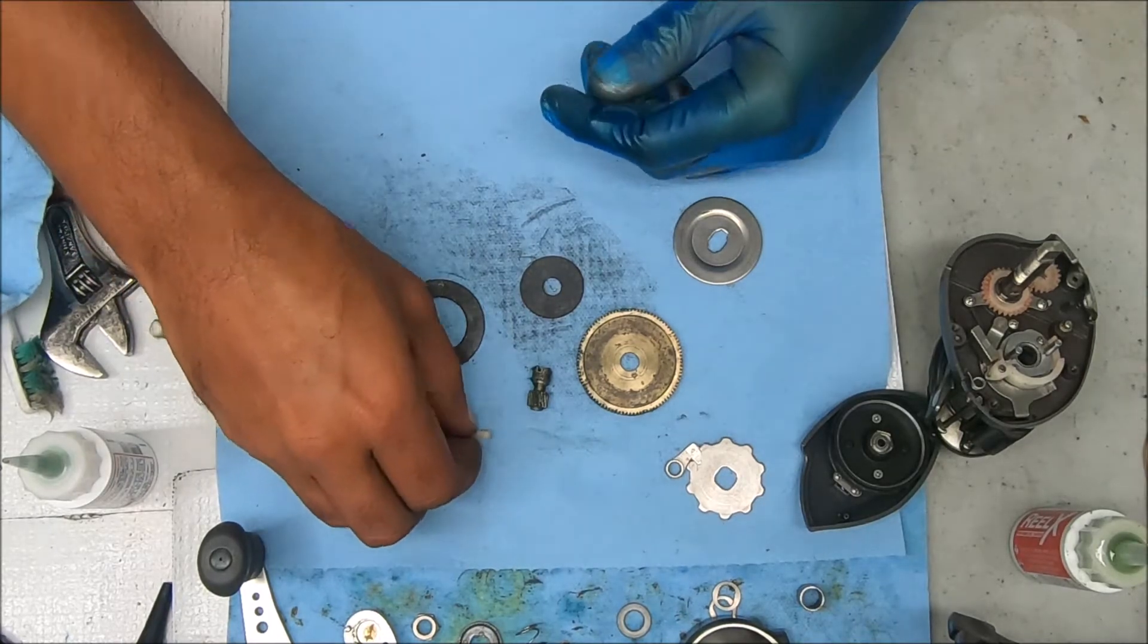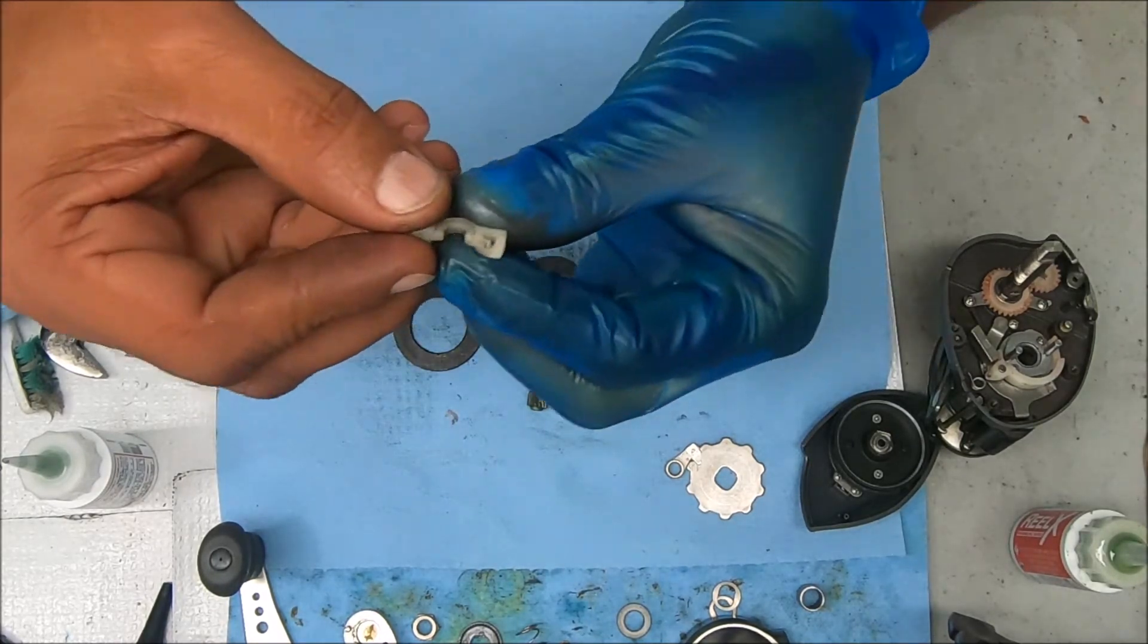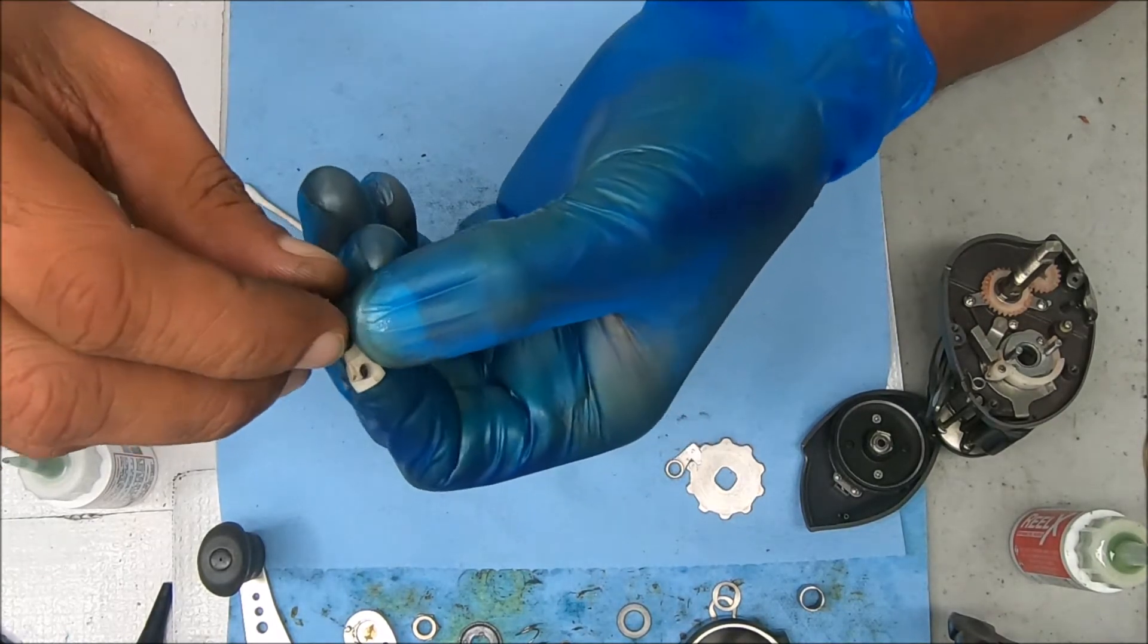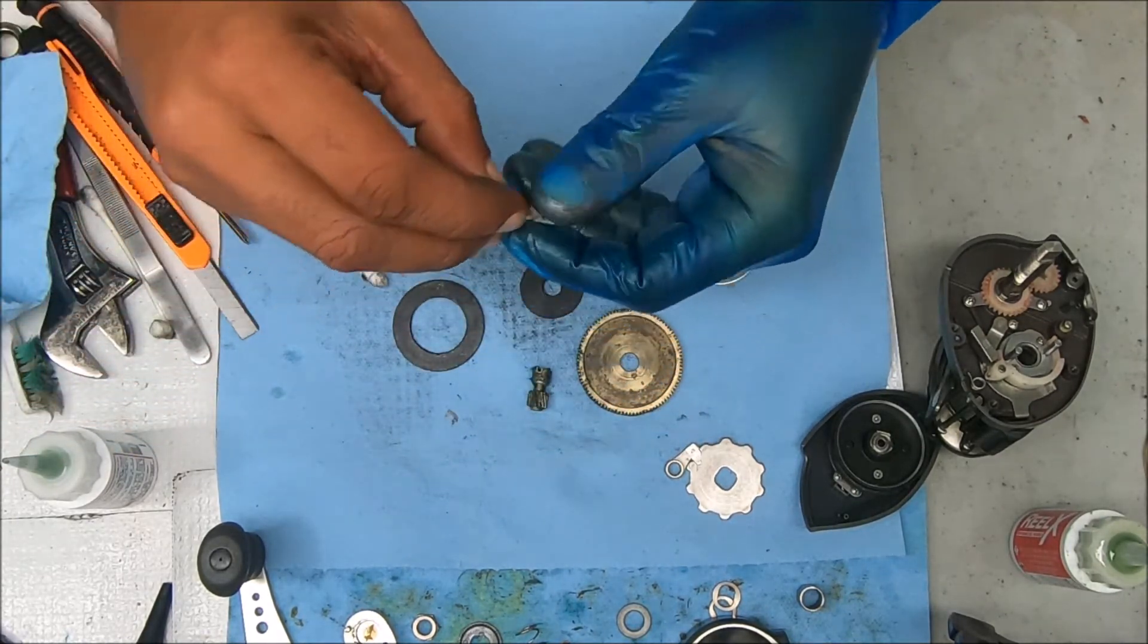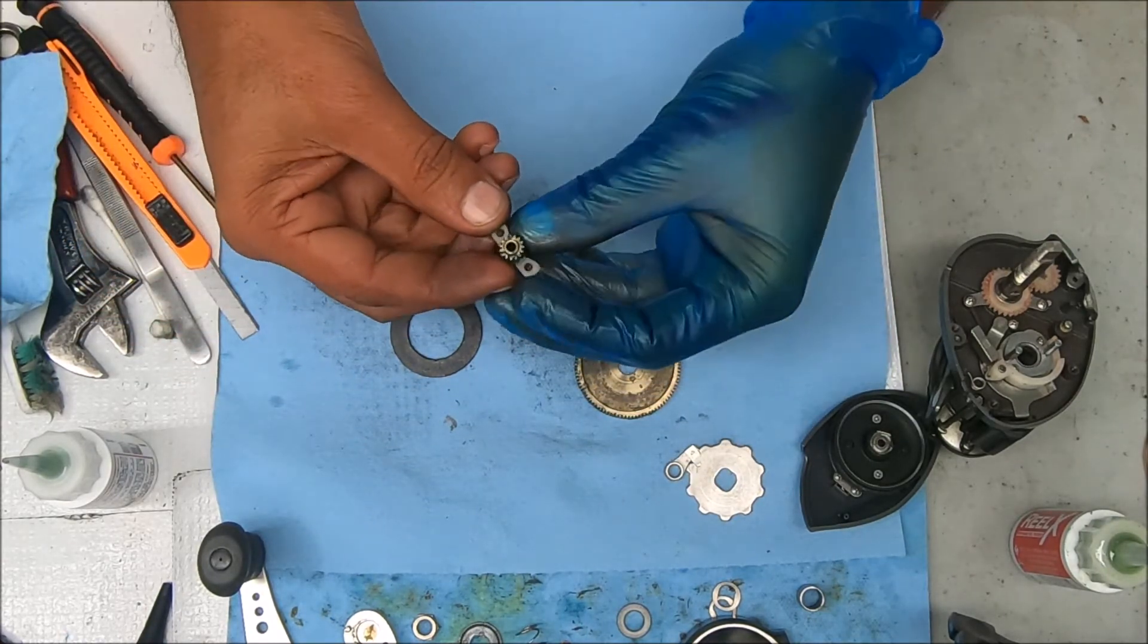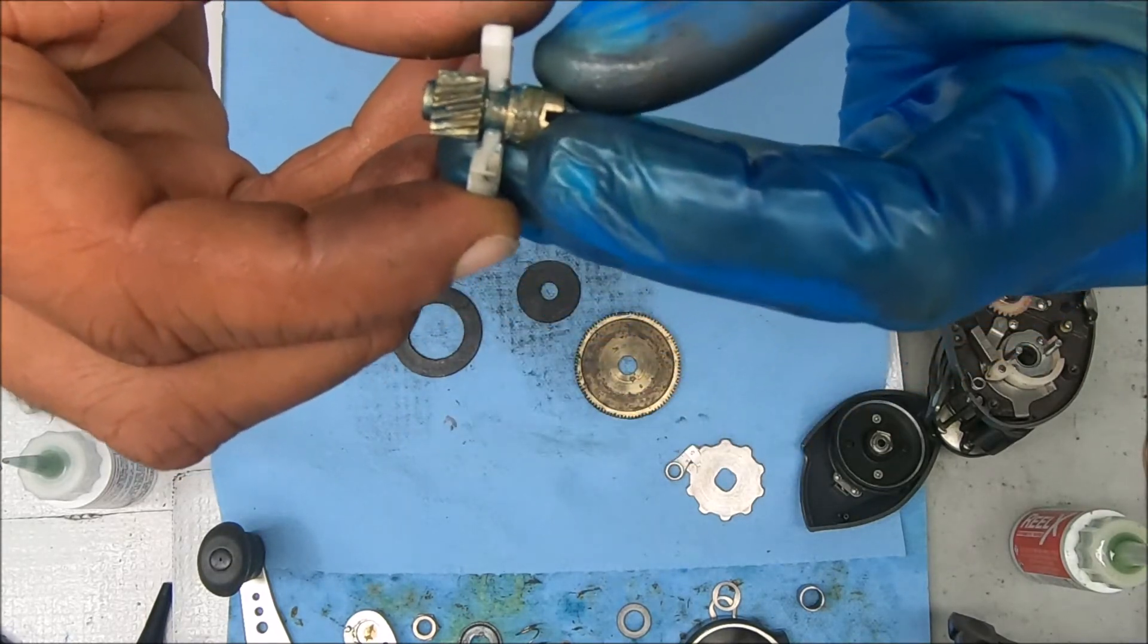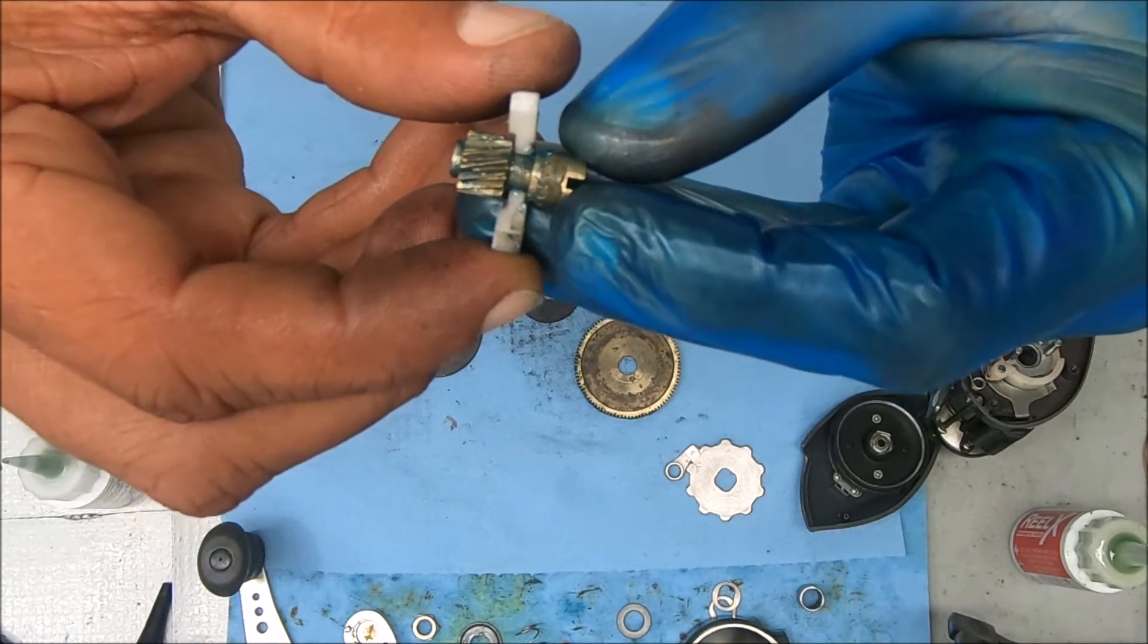So for this yoke, what you're going to see is the way it's going to sit is there's a couple of slants or sloped areas on there. Those sloped areas will be facing down. So you'll essentially have it looking like that. I'm going to bring that close. Hopefully you guys can see it. See the slope I'm referring to.